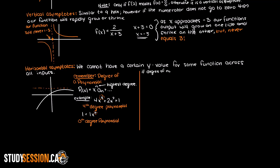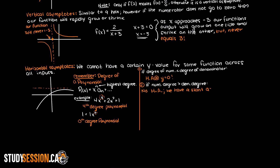Firstly, if the numerator's polynomial degree is smaller than the denominator's polynomial degree, then our horizontal asymptote is at y equals 0. Secondly, if the numerator's polynomial degree is larger than the denominator's polynomial degree, there is no horizontal asymptote. However, there will be what is called a slant asymptote, which is still a line on a graph where our function will never equal — but it is going to be at an angle.